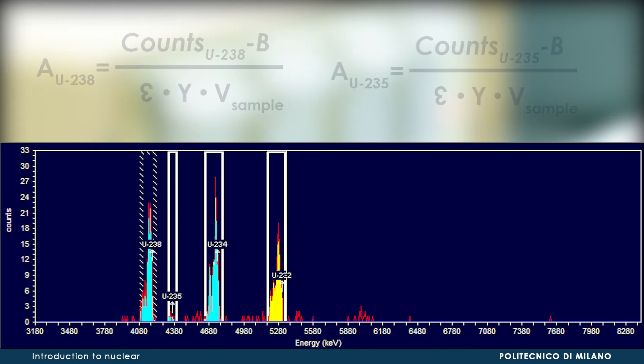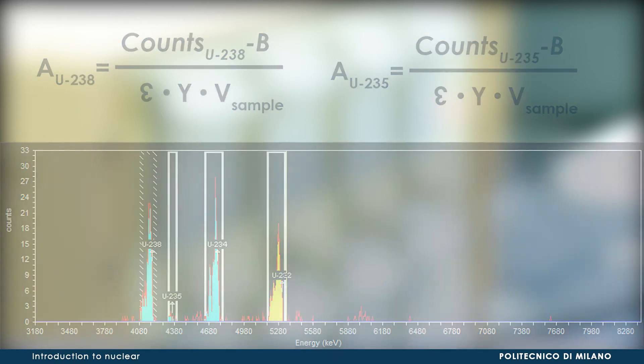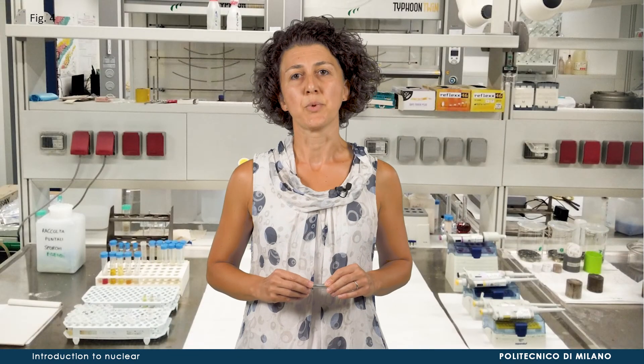The counts collected in the region of interest for each uranium isotope, together with counting efficiency, chemical yield and background, enable quantification of the uranium-238 and uranium-235 concentrations in the sample. As we have seen, the determination of uranium in water by alpha-spectrometry is quite difficult and time consuming, even more so in solid matrices.